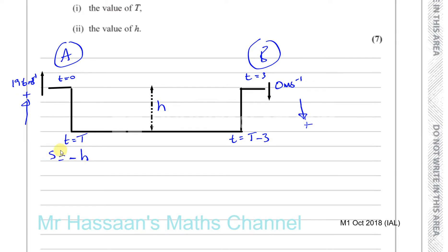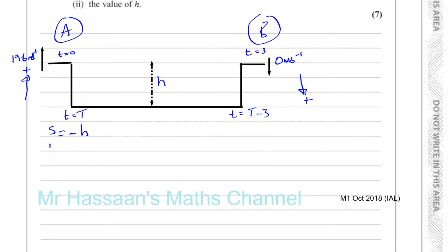S does not represent the distance travelled — it represents the displacement, how far it is from its initial position. Distance is the ground covered, whereas displacement is the distance away from the initial position. So in SUVAT, for particle A: S equals minus H, U equals 19.6, A equals minus 9.8, and T equals capital T.